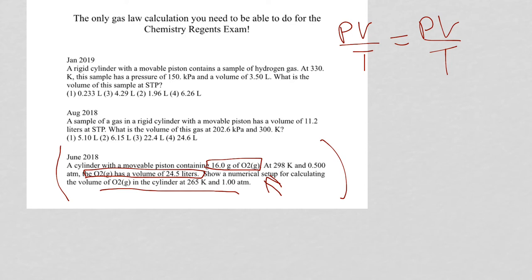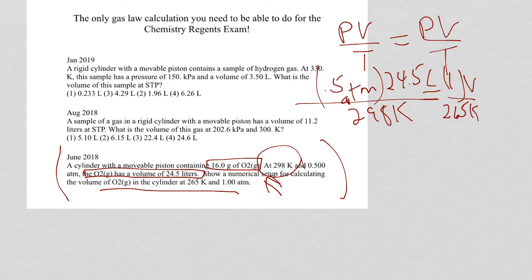My starting pressure was given as 0.5 ATM. The volume is 24.5 liters. I'm told it's also at 298 Kelvin. Then we want to calculate the new volume. That's V. We have a pressure of 1 ATM and 265 K.